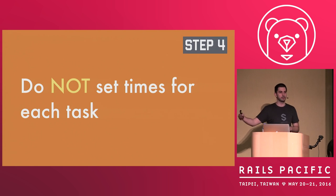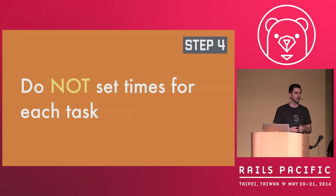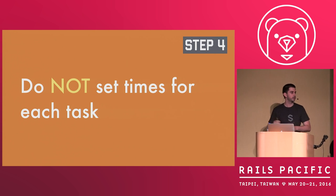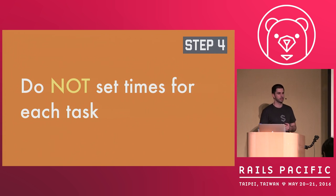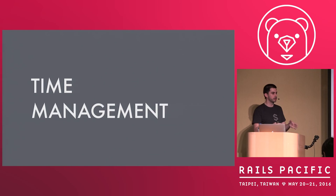Another thing I recommend is do not set times for each task. I think it's very hard to plan your day by saying I'm going to do this task from 9 a.m. to 10 a.m. This will set you up for failure, because you're going to go overtime on some tasks and some will be shorter. What if you have an hour and it takes half an hour — are you going to go on Twitter for the other half? It's not a good way to plan your day. Instead, we should be getting better at time management — doing more with your time, not time allocation or estimation.